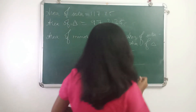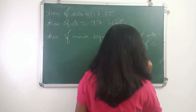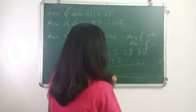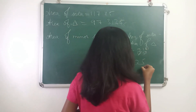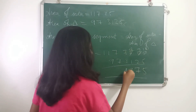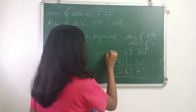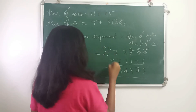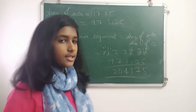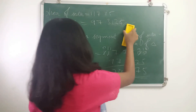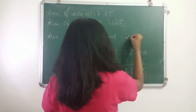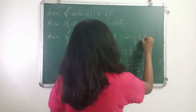Subtracting 97.3125 from 117.75, we get 20.4375. So 20.4375 cm squared is the area of the minor segment.